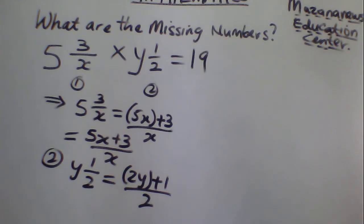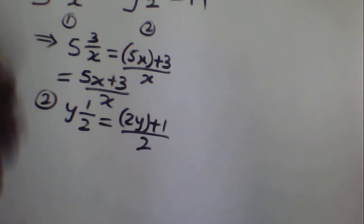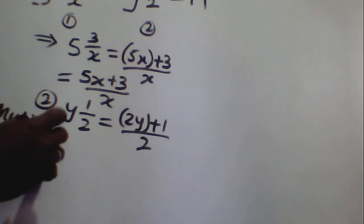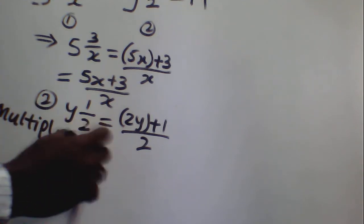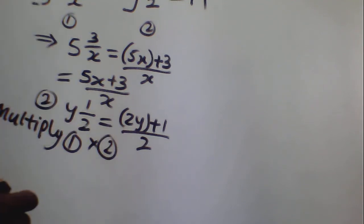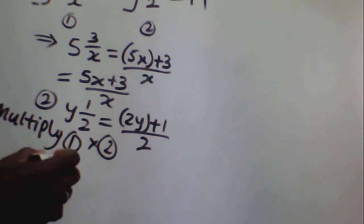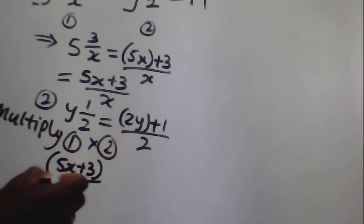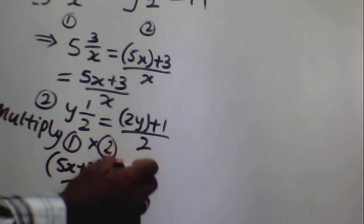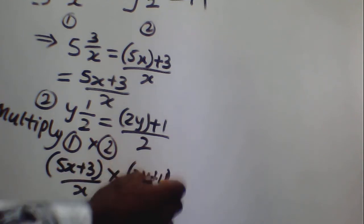Once you have arrived at this point, the next step is to simplify to get the values of x and y. You can return this to the equations and it will be easy for you to see. We now multiply — multiply 1 by 2, and do the multiplication.